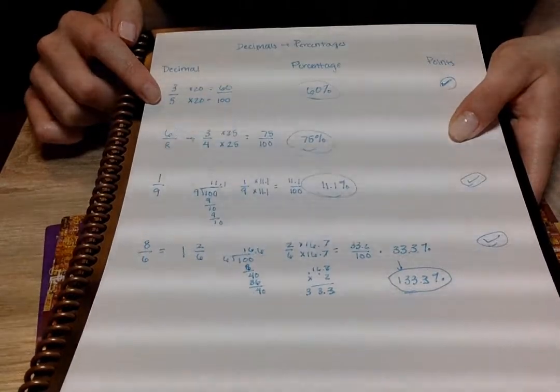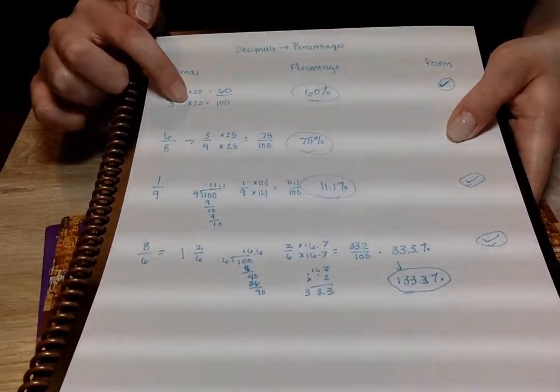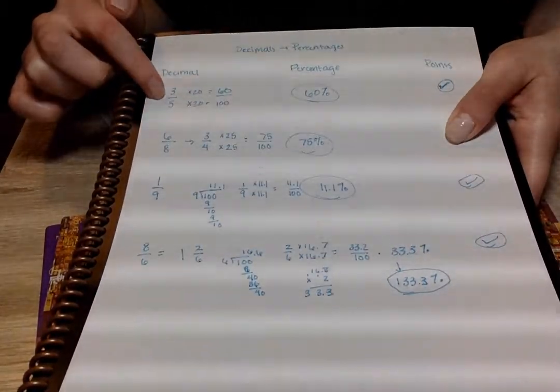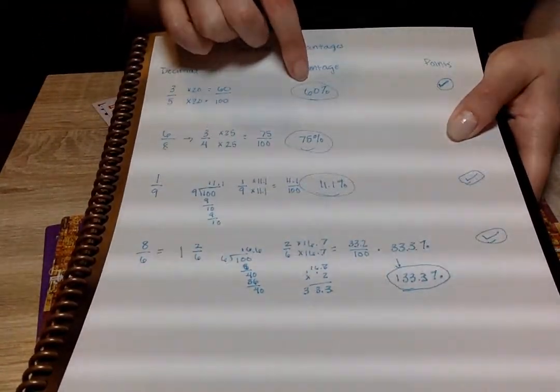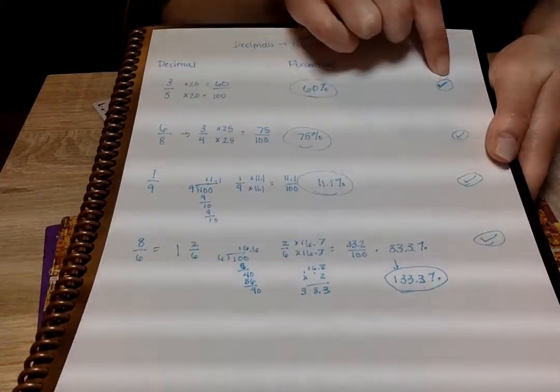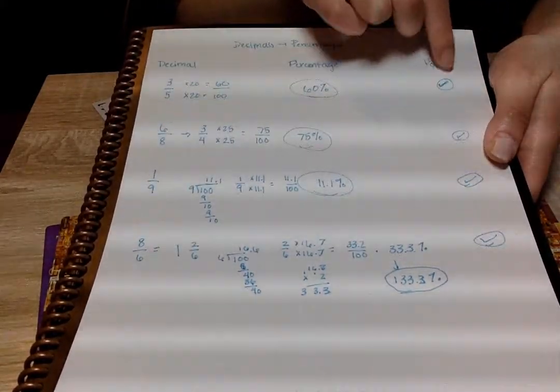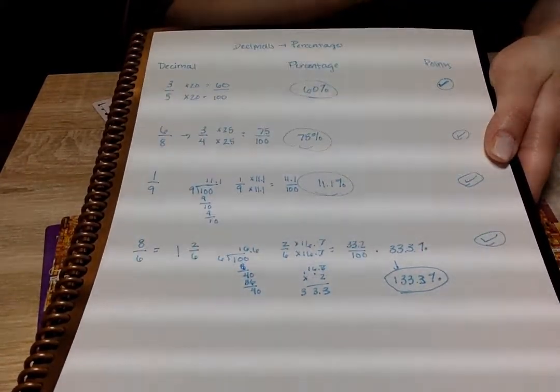So for 3 fifths, they know that 5 goes into 100 20 times, so they're going to multiply both of these by 20 to get 60 over 100, which creates 60%. Whoever gets there the fastest gets a point and a check mark, and they put a little check in their notebook to symbolize that they won.